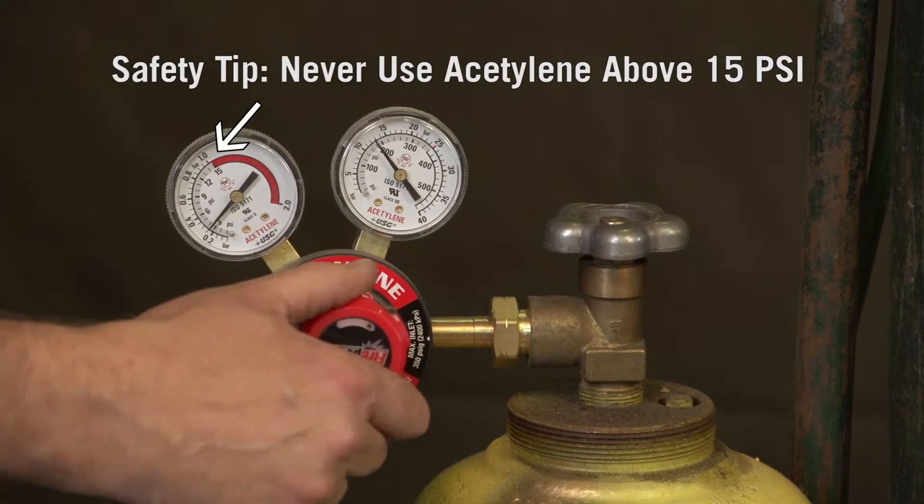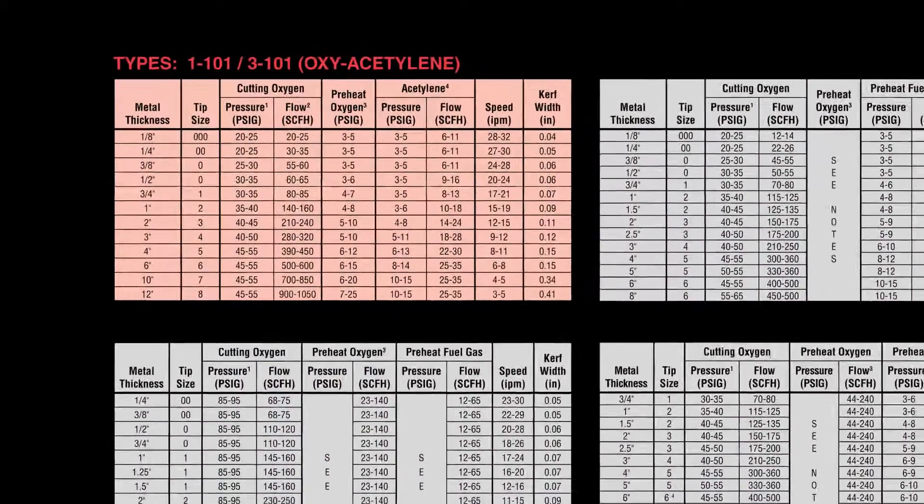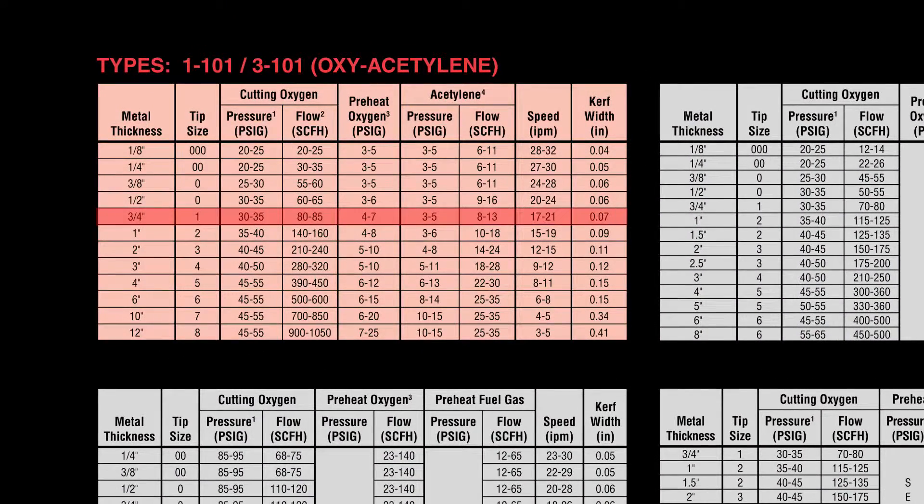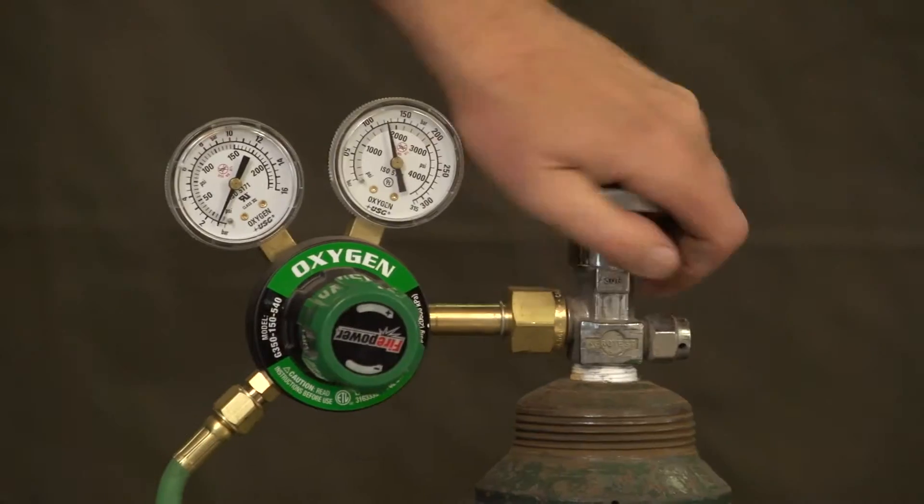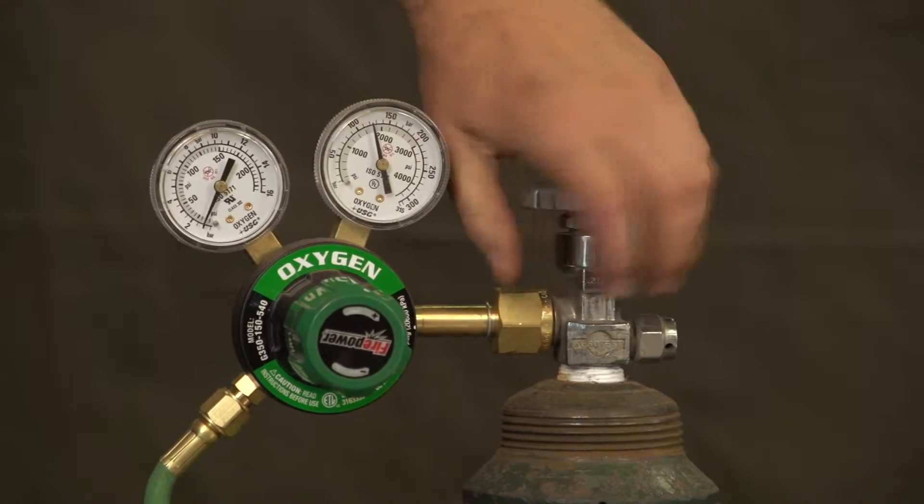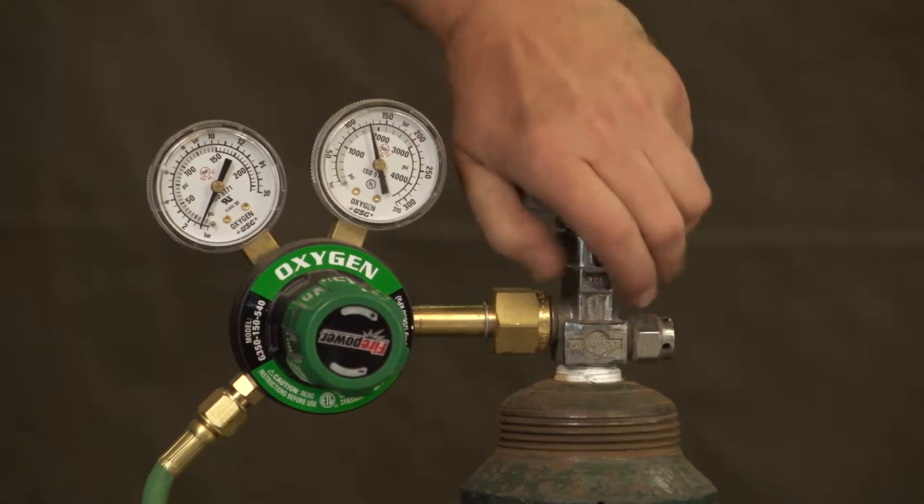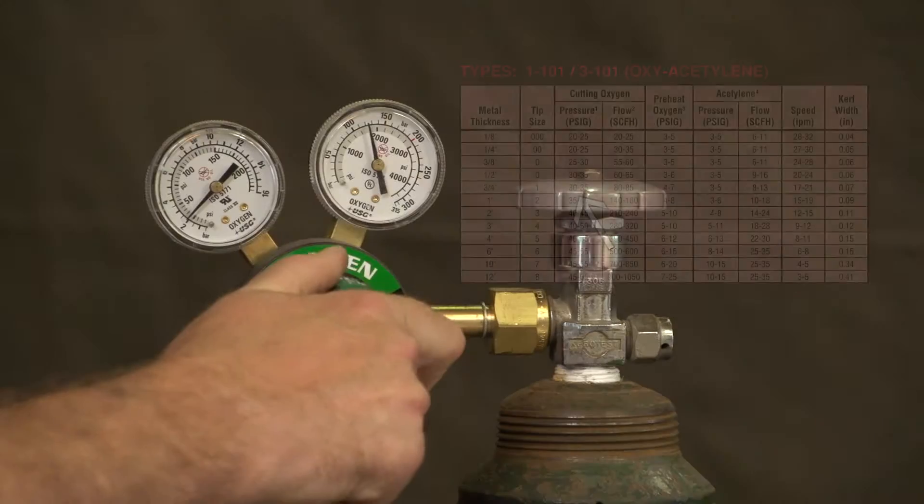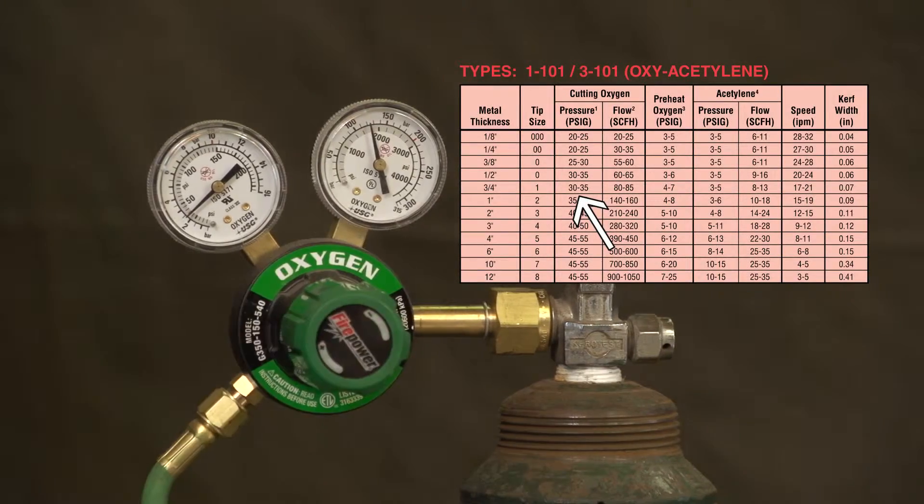Adjust acetylene pressure. Refer to a tip chart and obtain the proper gas flow rate for the tip size selected. Open the oxygen cylinder all the way as its valve seats fully in the open position. Set the oxygen pressure according to the tip chart.